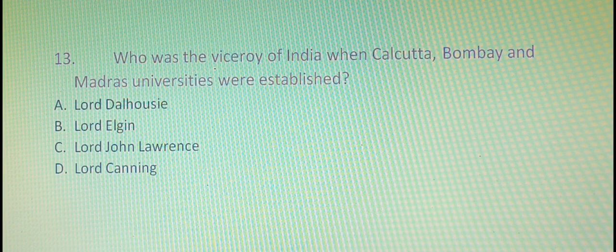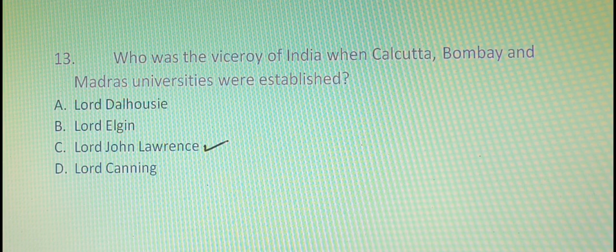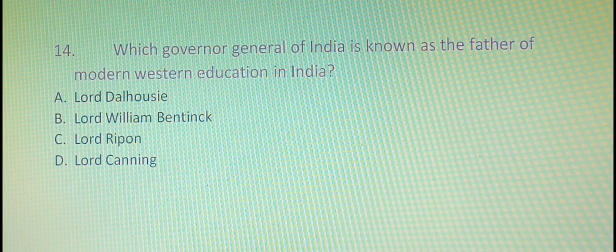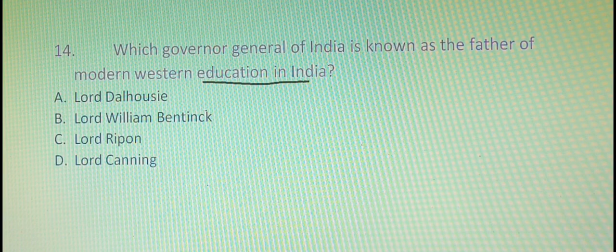Our thirteenth question is: who was the Viceroy of India when Calcutta, Bombay, and Madras Universities were established? The right option is option C, that is Lord John Lawrence. The fourteenth question is: which Governor General of India is known as the Father of Modern Western Education in India? The right answer is option B, that is Lord William Bentinck.